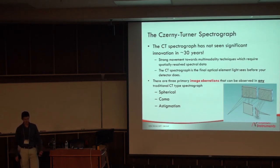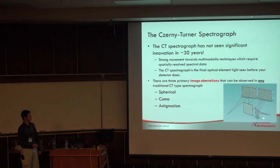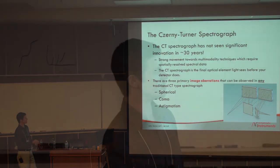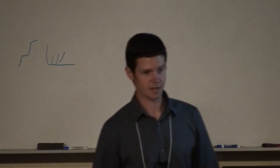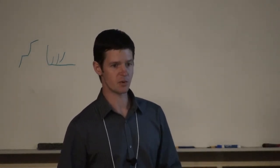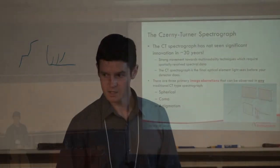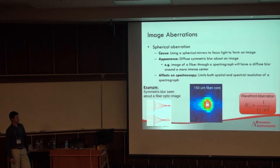For about as long as I've been alive, this instrument hasn't changed, and to me that was really interesting. There is a strong movement towards multi-modality techniques that require spatially resolved spectral data — you want to acquire data in a two-dimensional array at the focal plane. The major problem with this instrument is image aberrations. The three first Seidel aberrations that destroy an image are spherical aberration, chromatic aberration, and astigmatism, listed in order of severity — and these are the three main players in the Cerny-Turner spectrograph.